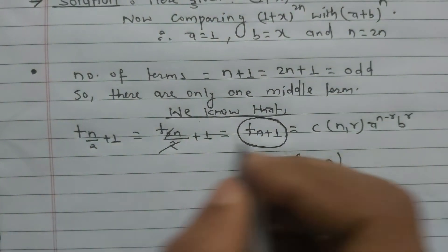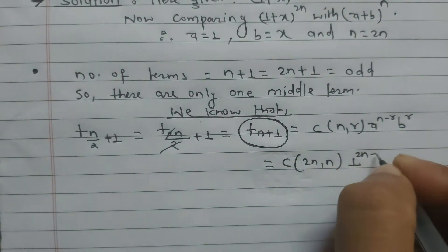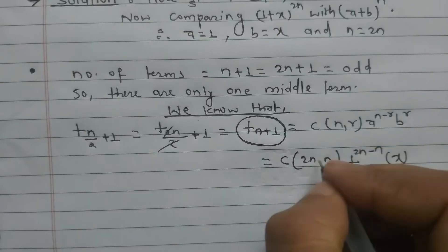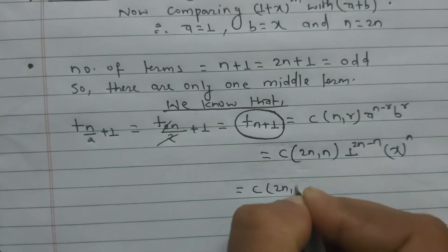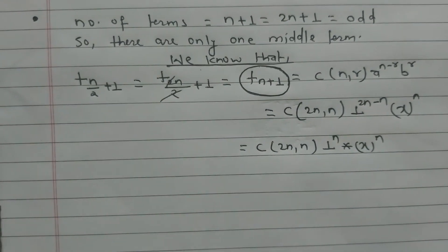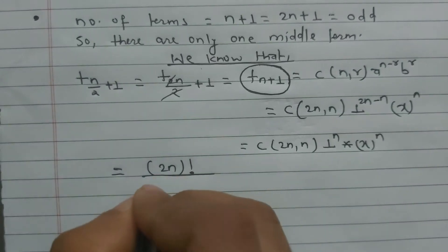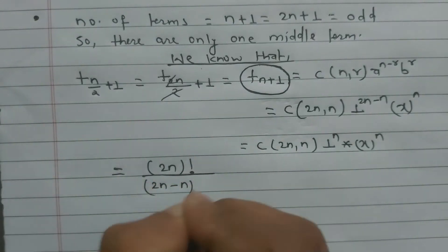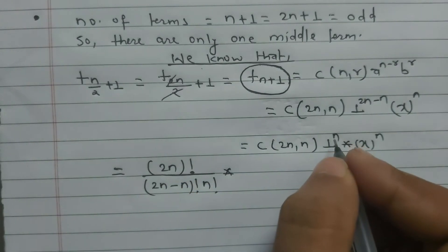Now substituting the values: a = 1, n = 2n, r = n, b = x. This gives C(2n, n)·1^(2n−n)·x^n = C(2n, n)·1^n·x^n. The formula for C(2n, n) is (2n)! divided by [n!·n!]. Note that 1 raised to any power is always 1.